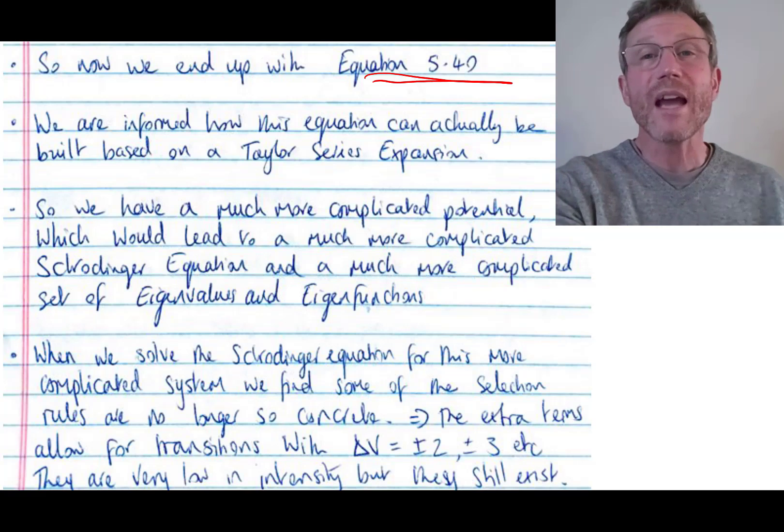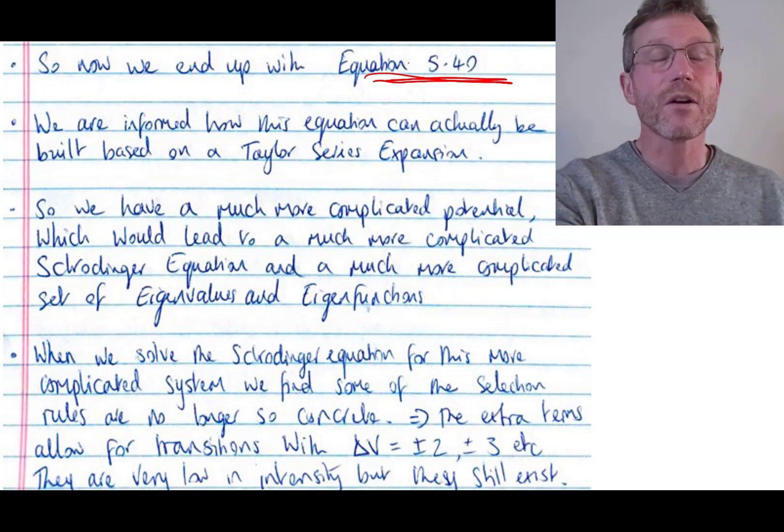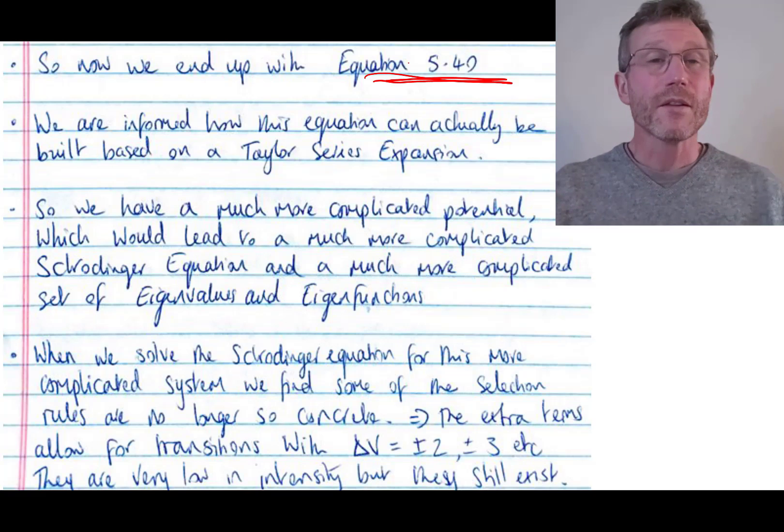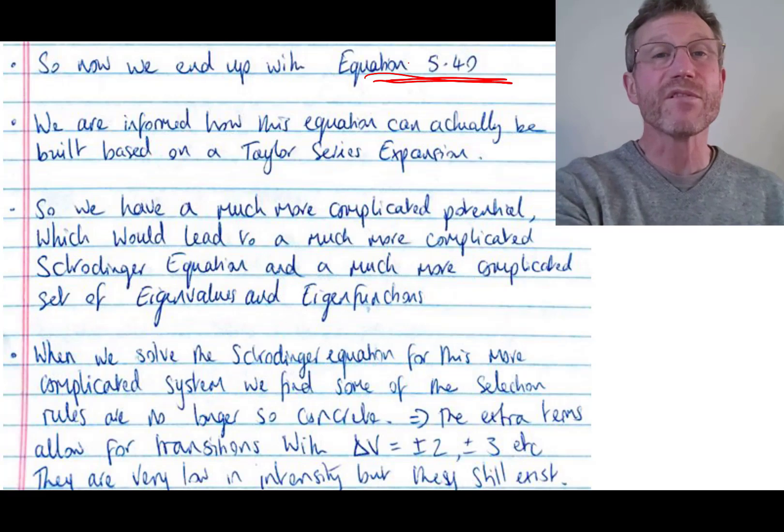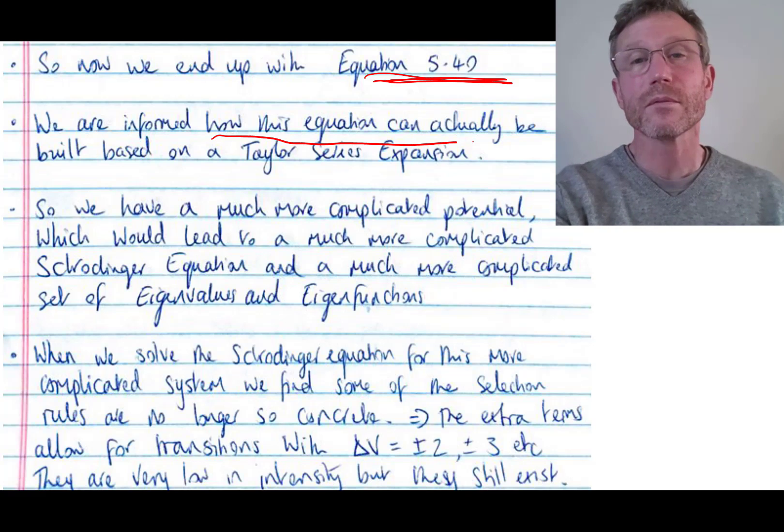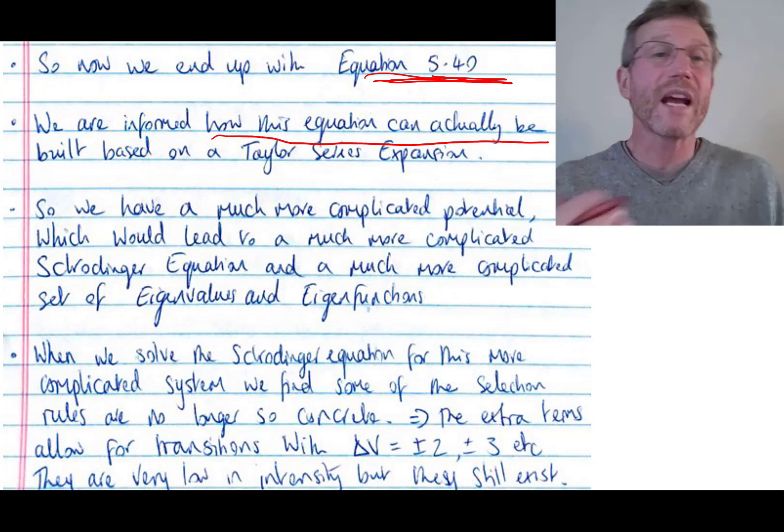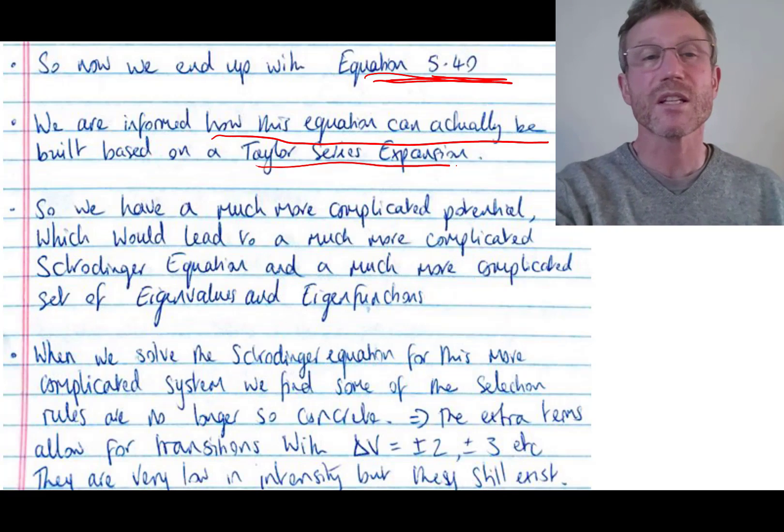these additional terms in it that starts to get close to that Morse potential. How did we get that equation 5.40? Well, math. The math chapter D informed us as to how this equation 5.40 could actually be built on a Taylor series expansion.